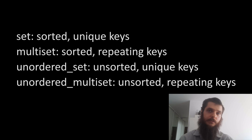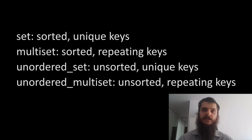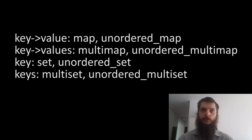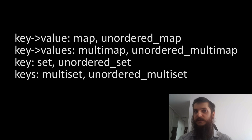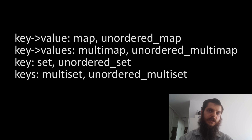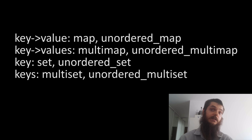A set is sorted based on the equivalence principle using operator less, while an unordered set is based on hash values and may be faster for lookups. Prefer an unordered set when you don't care about the order of keys. For a multi-set and unordered multi-set, the same principle applies as with maps and multi-maps: a set can store a key just once while a multi-set can store many equivalent keys. To summarize: for key-value mapping, use a map or unordered map; if sorted, use a map; if order doesn't matter, use an unordered map.